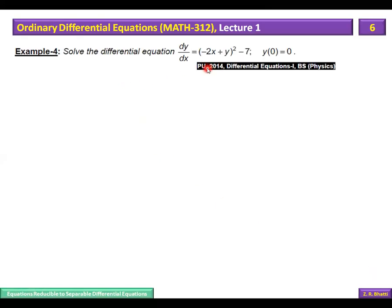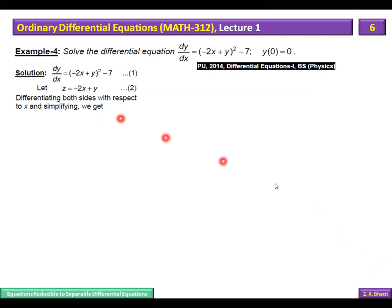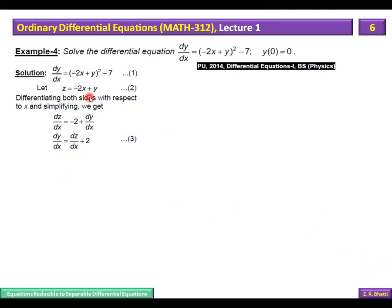Now let's take an example. The variable substitution used is z = −2x + y, making the equation separable in z and x.